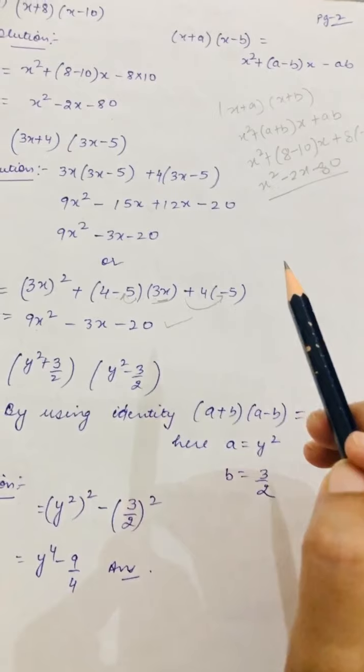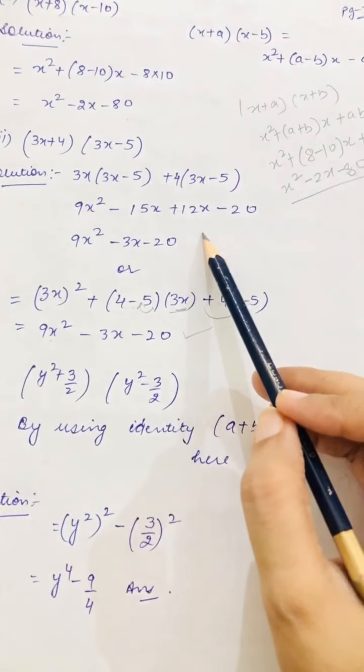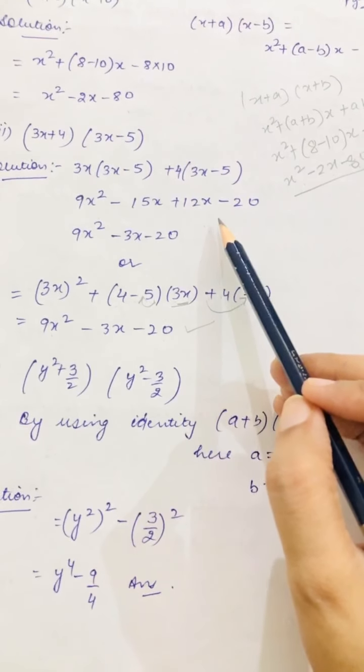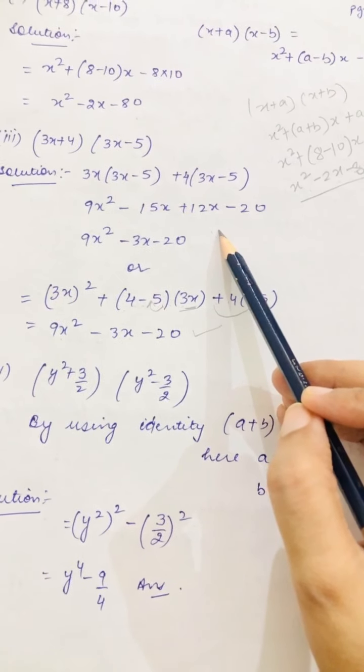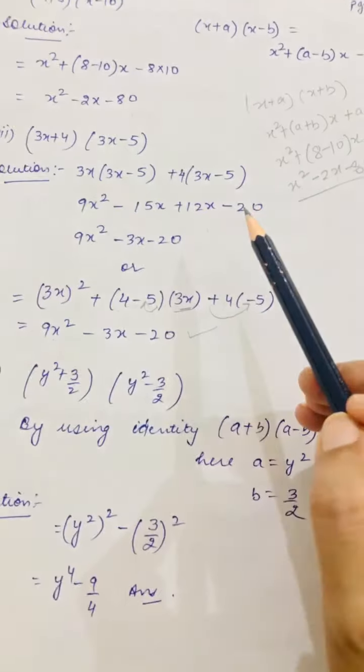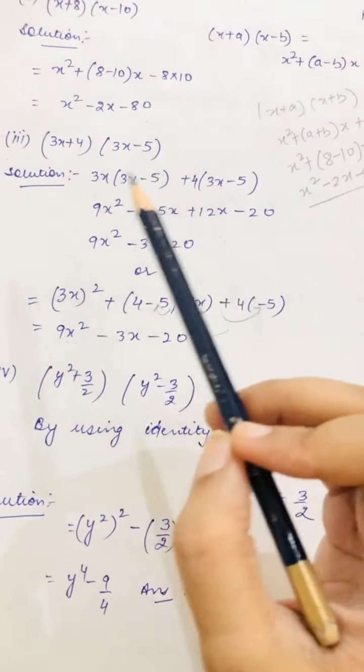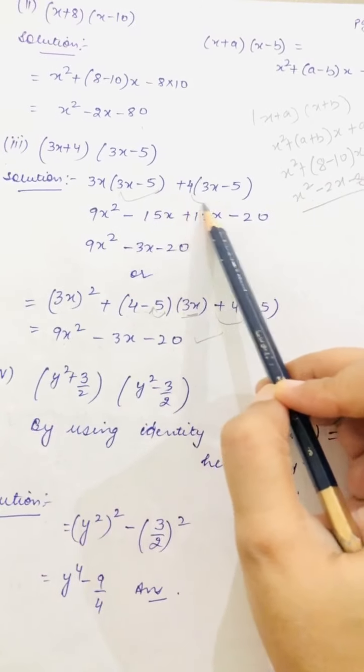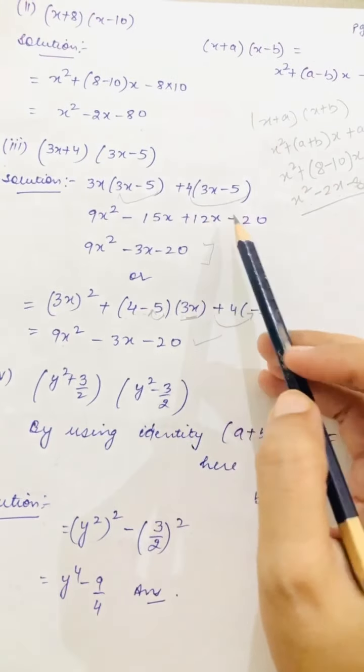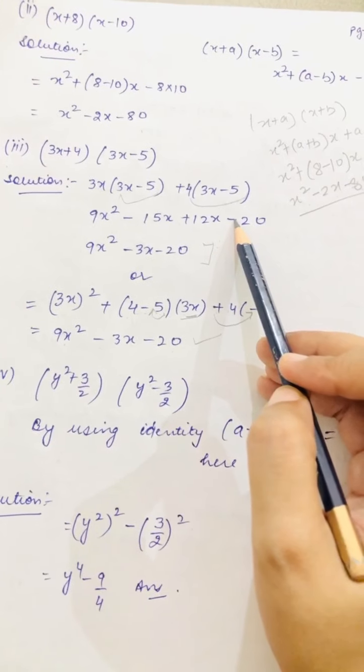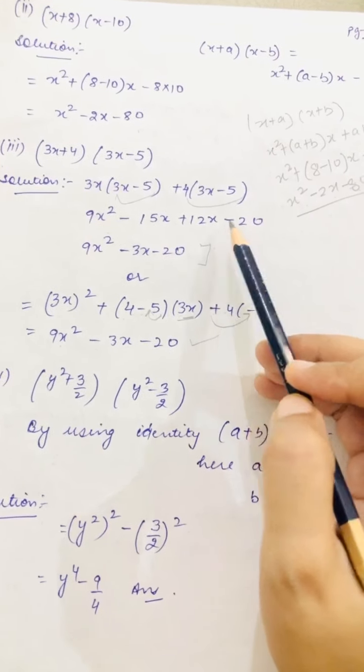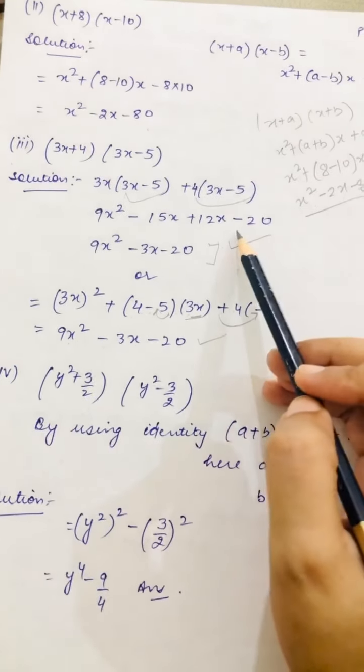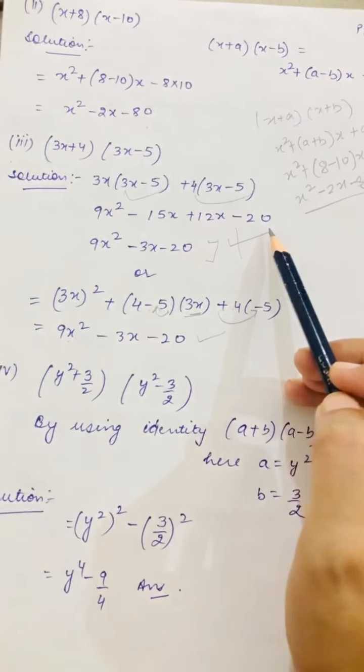If it's said that identity has to be used, this is also the right way. But here no identity was used. What students do is this method. But in the paper it's written to use identity. This is not any identity. This is just multiplication, where 3x is multiplied with the whole bracket, then 4 is multiplied with the whole bracket. The answer will remain the same, but this is without identity. In some questions, if identity is not asked, then you can do this. But if it's asked with identity, then you cannot do the question like this.